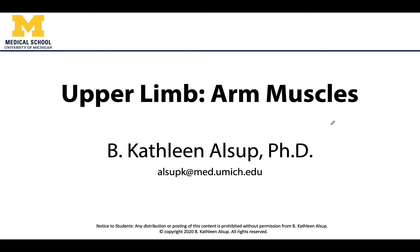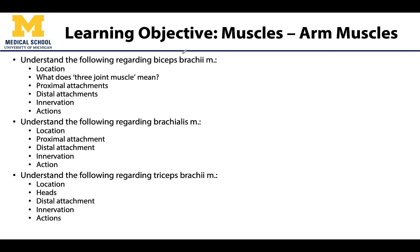Hello anatomy friends, this is Dr. Alsup and we are going to continue our discussion of the muscles of the upper limb, focusing on the muscles of the arm — specifically the muscles that have their muscle bellies associated with the arm. There are three major muscles: the biceps brachii, the brachialis — both anterior — and the triceps brachii, which is our posterior muscle.